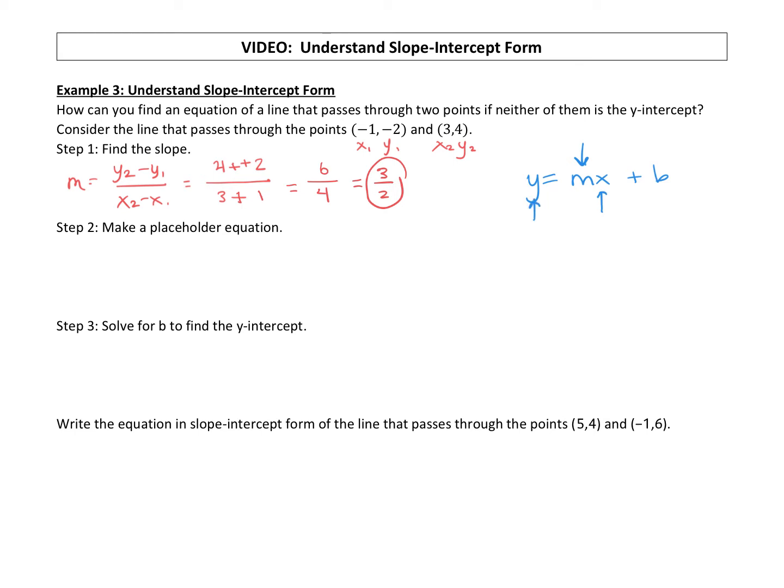Our slope-intercept form is y equals mx plus b. We just found the m. We know what that is. We have two ordered pairs that we can plug in, an x and a y value, which would allow us to solve for b. So I tend to always just grab the first point. You just need one x and one y. We're going to take this x, plug it in for this x. We're going to take this y, plug it in for this y. And we're going to take this slope and plug it in for the m.